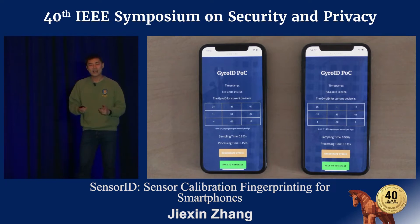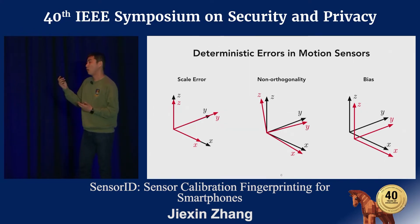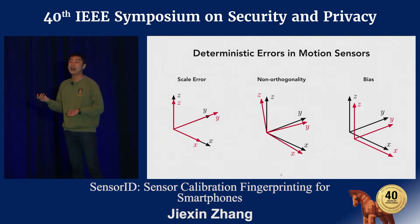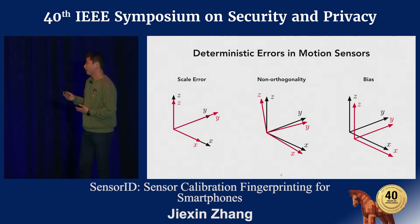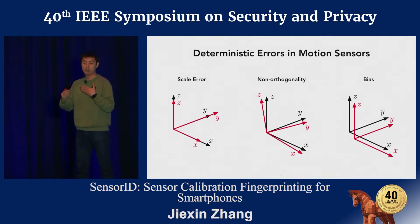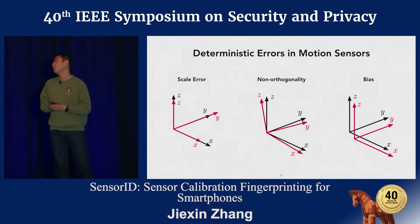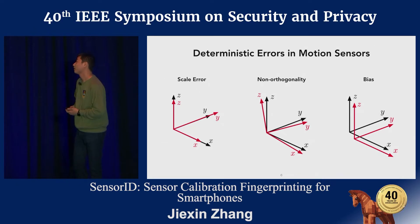So how does this attack work? The motion sensors suffer from different types of deterministic errors, often called systematic errors, due to manufacturing imperfections — and this is inevitable. In general, these errors can be classified into three categories: the scale error, meaning the axis of the sensors differs from the design; non-orthogonality, meaning the axes of the sensors are not perpendicular to each other; and the bias, meaning the reference point of the sensor differs from the nominal value.